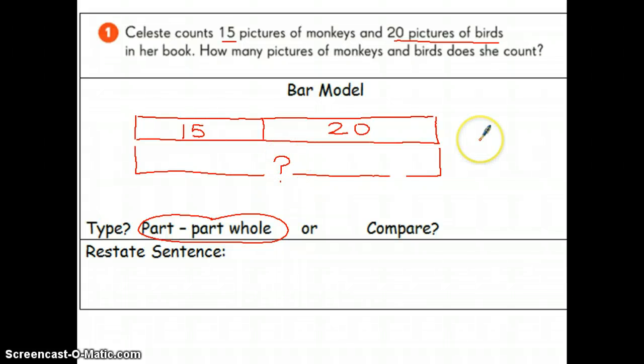I'm going to go over to the space here and start my number sentence and that is 15 plus 20 and that equals 35. I'm going to take that sum and insert it into my restate sentence. I'm going to look back to the question to make sure I'm picking the important words from the question.